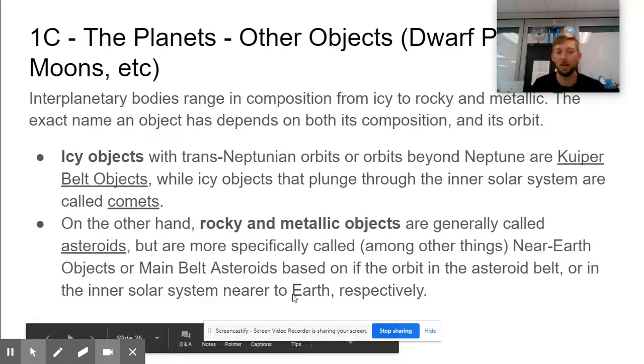More specifically, they're called near-Earth objects or NEOs, or main belt asteroids, MBAs. If they're in the asteroid belt, they're main belt asteroids, but if they're floating close to Earth, they're near-Earth objects. Again, asteroids are rocky and metallic, comets are icy.